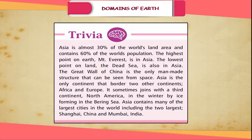Trivia. Asia is almost 30% of the world's land area and contains 60% of the world's population. The highest point on Earth, Mount Everest, is in Asia. The lowest point on land, the Dead Sea, is also in Asia. The Great Wall of China is the only man-made structure that can be seen from space. Asia is the only continent that borders two other continents, Africa and Europe. It sometimes joins with a third continent, North America, in the winter by ice forming in the Bering Sea. Asia contains many of the largest cities in the world, including the two largest, Shanghai, China and Mumbai, India.